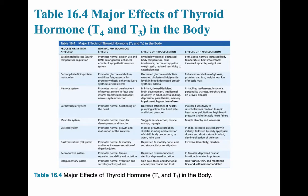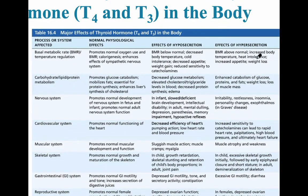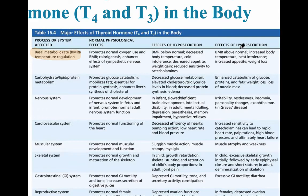This slide shows the major effects of the thyroid hormones T3 and T4 in the body. The first column shows the process or system affected — basal metabolic rate is a major function of thyroid hormone, as is temperature regulation. These are the normal physiological functions. In the case of hyposecretion, all of these represent hypothyroidism, where the thyroid is not acting as it should. The last column shows the effects of hyperthyroidism, which is hypersecretion.